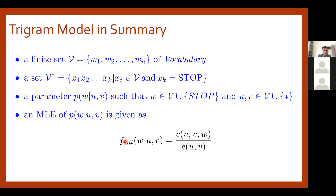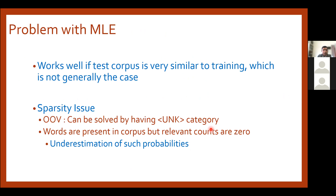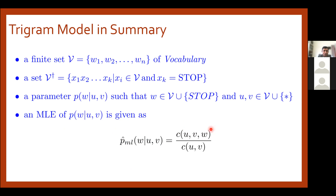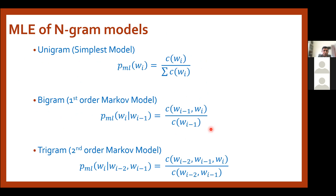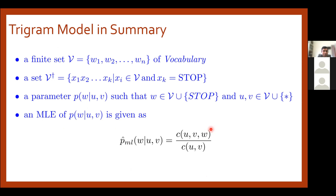To formally define the bigram model: we modify the conditional probability definition slightly, and with maximum likelihood estimation we reduce the problem considerably. Instead of considering the entire context, we consider only the previous k words, which greatly reduces the chance of zero probabilities. However, this problem is not completely eliminated — some word sequences will still be unseen in training data.